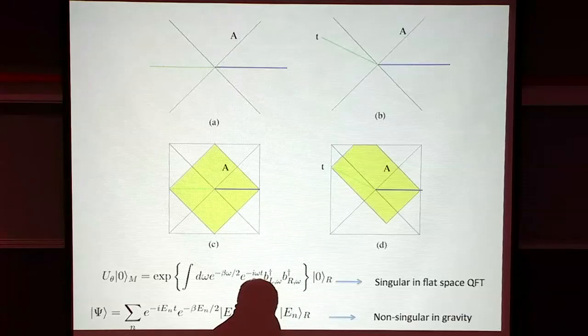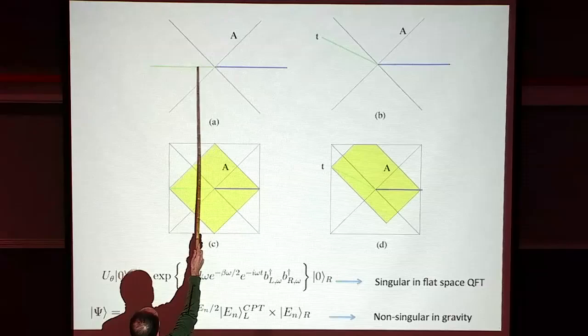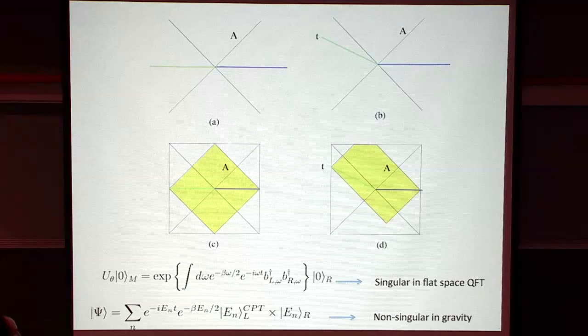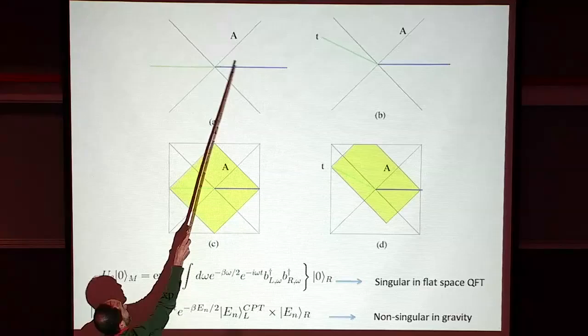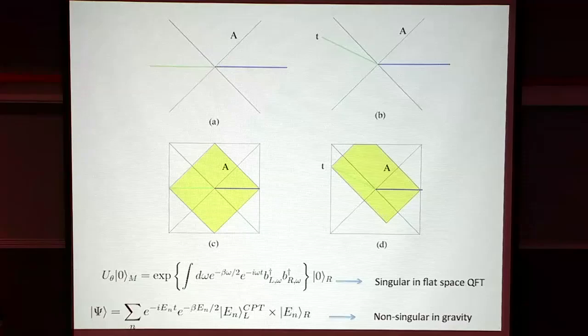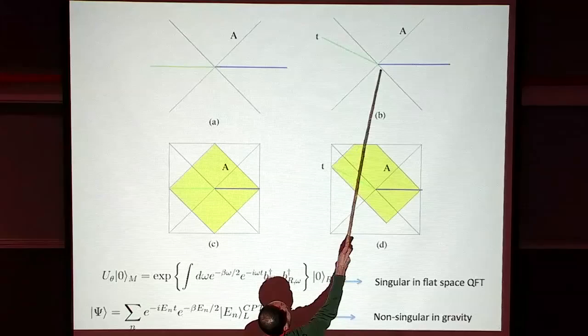Here's a fun example. In quantum field theory, you can consider the entangled state describing the Minkowski vacuum in Rindler coordinates. Then you make a unitary transformation that just adds a little phase factor for each of the modes. This state, because you added this little phase factor, becomes singular - it's a state that contains a singularity and would be singular on the light cone. Just this little phase change would make this state singular. But the state would be non-singular if we viewed it as quantized along a different slice.